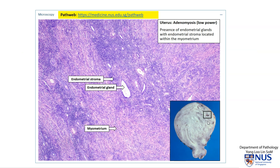Microscopically, we look in the myometrium for abnormal areas — specifically the presence of endometrial glands and stroma. This whole area is an area of adenomyosis, and we can see the presence of endometrial glands, which are lined by a very bland, benign columnar epithelium, and the surrounding stroma which is bluish on low magnification. It looks different from the surrounding myometrium, which appears pink with fascicles of smooth muscle cells that have quite abundant cytoplasm.